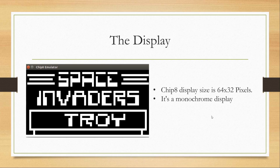The display is probably the most complicated part of the Chip 8, mainly because of sprites. The Chip 8 has a display size of 64 by 32 pixels. It's a monochrome display, which means pixels only have one color — they're either on or off. Here we can see white means the pixel is on and black means the pixel is off. This is a screenshot from Space Invaders on the Chip 8 emulator.